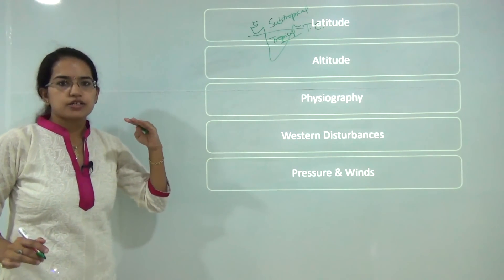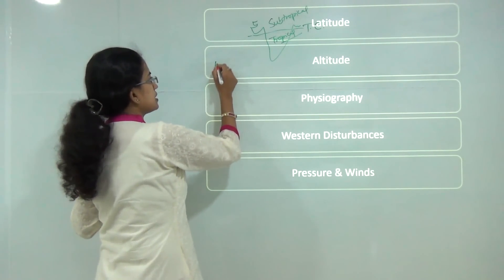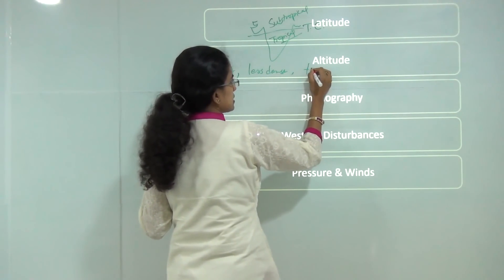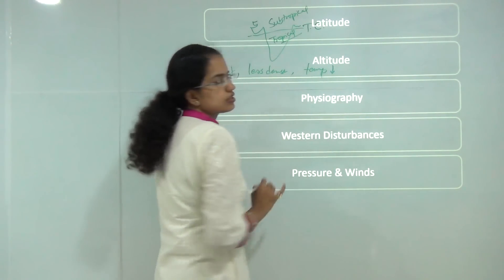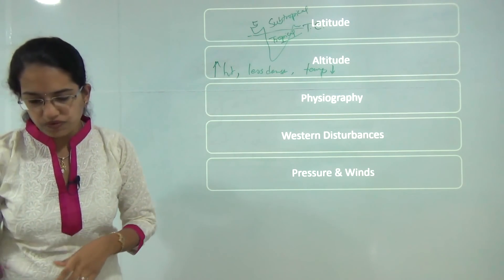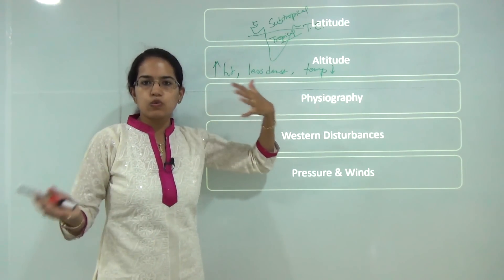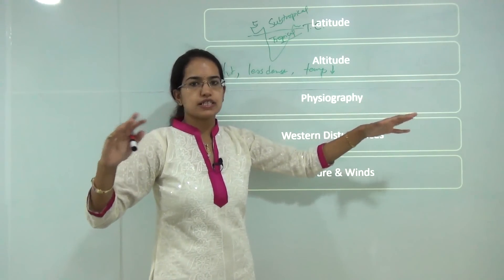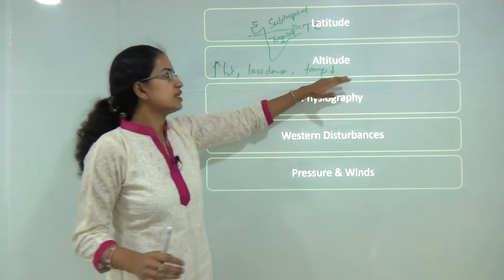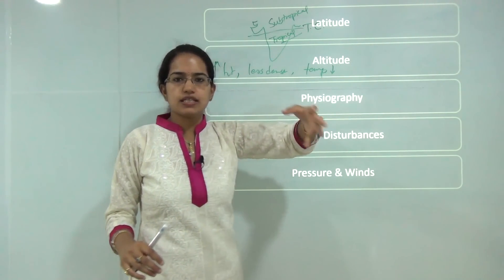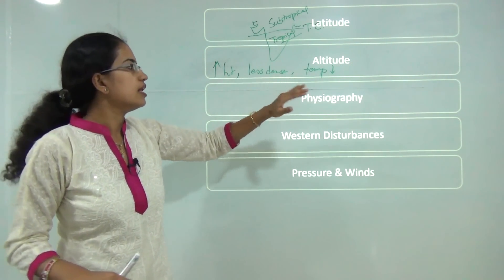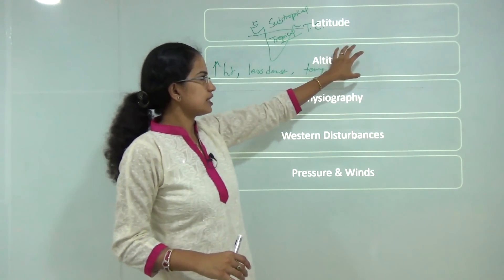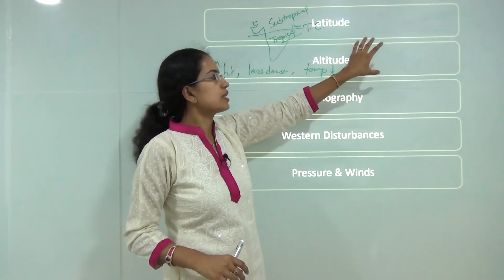The second factor is altitude. As we move higher in altitude, the air becomes less dense and the temperature falls. Therefore, hills are cooler in summer. Areas like U.P., Punjab and Haryana are hot, while altitudinal hill stations like Ooty, Dehradun, and Nainital are much cooler compared to the low-lying areas. Altitude is another factor that affects the monsoon.